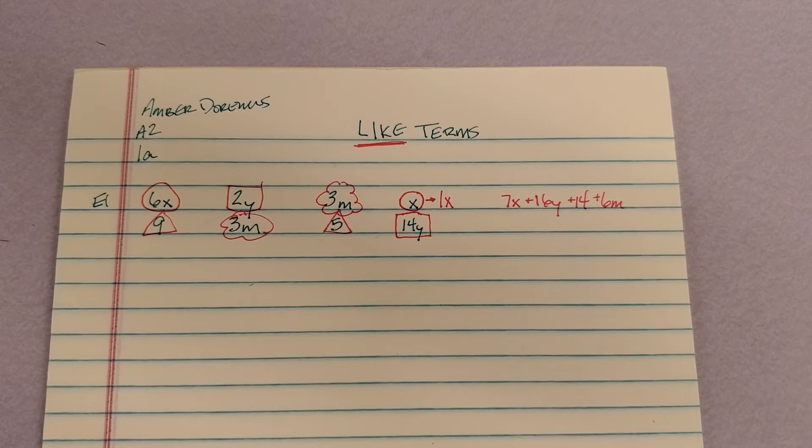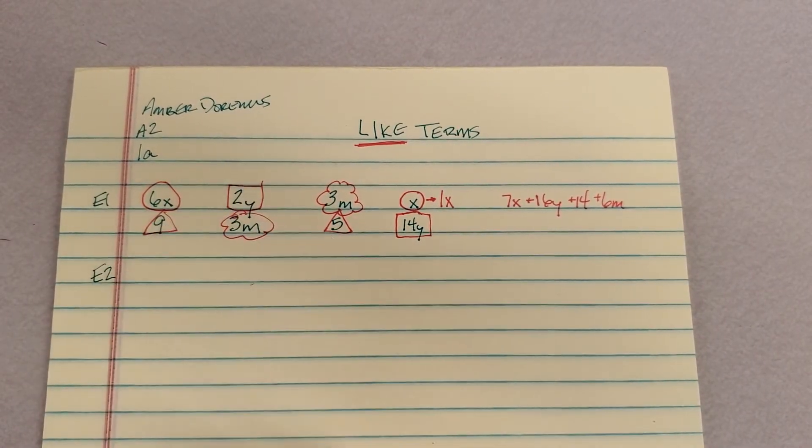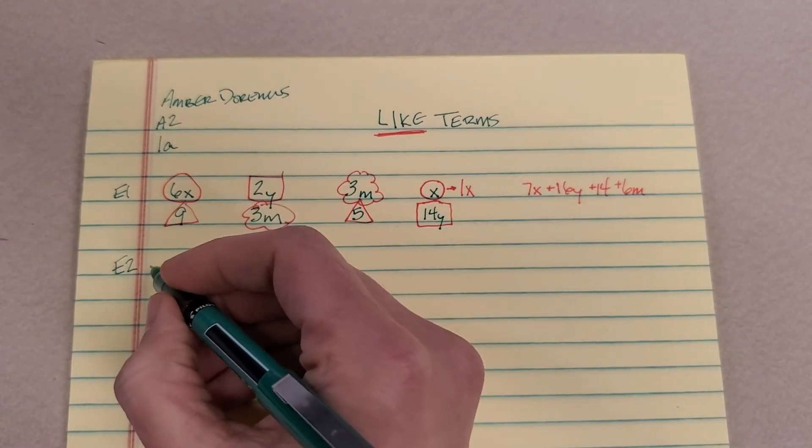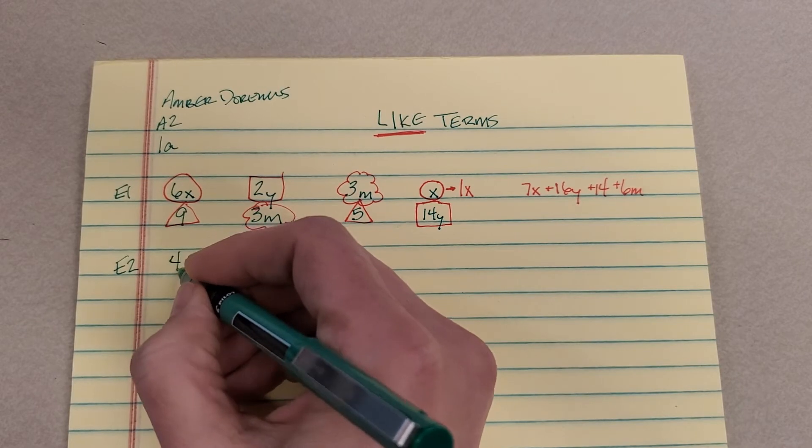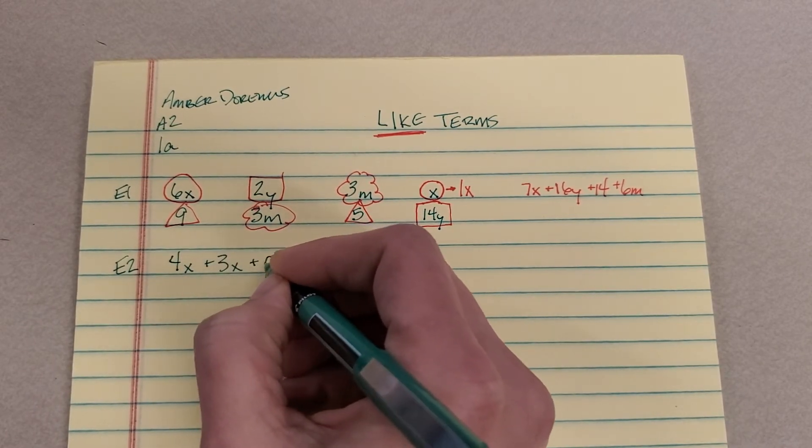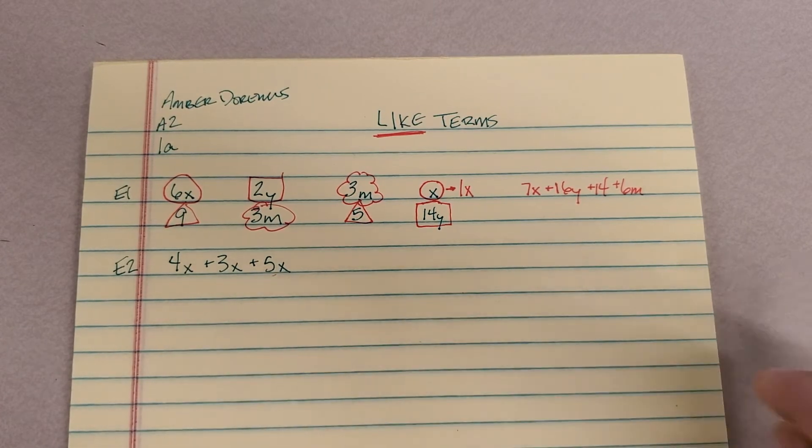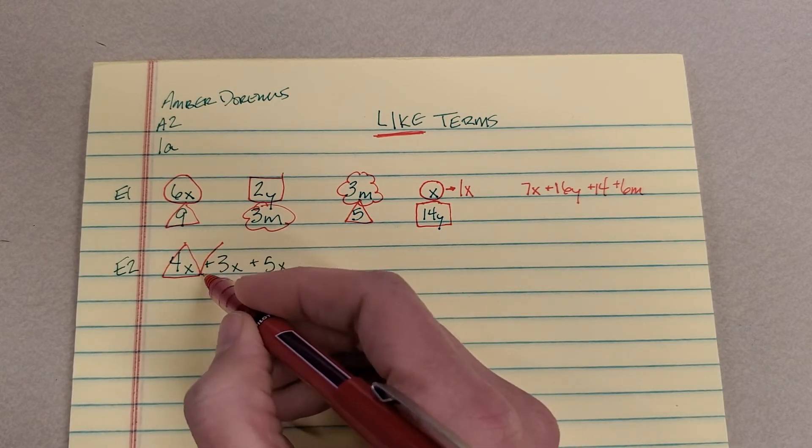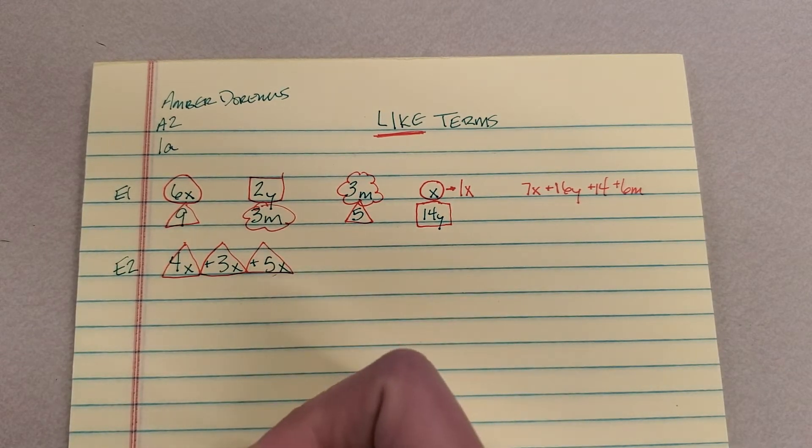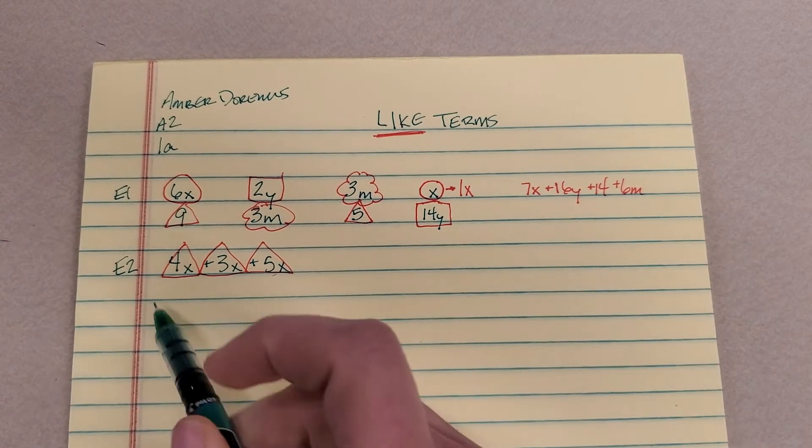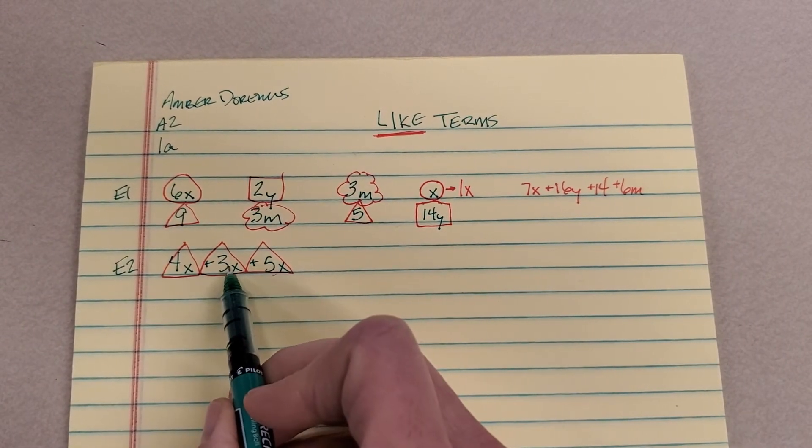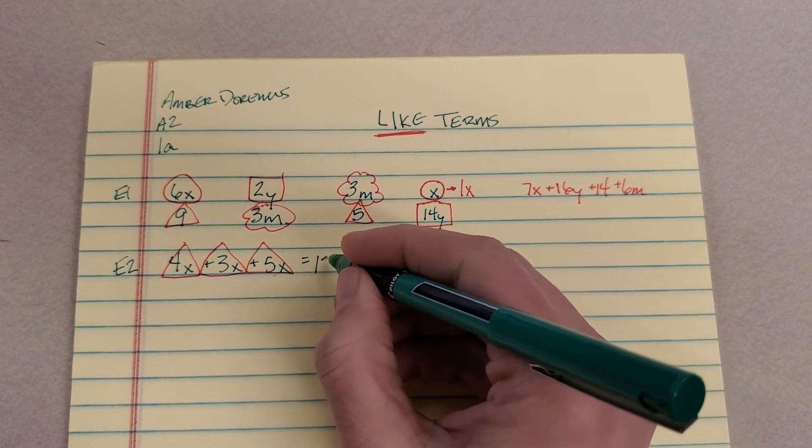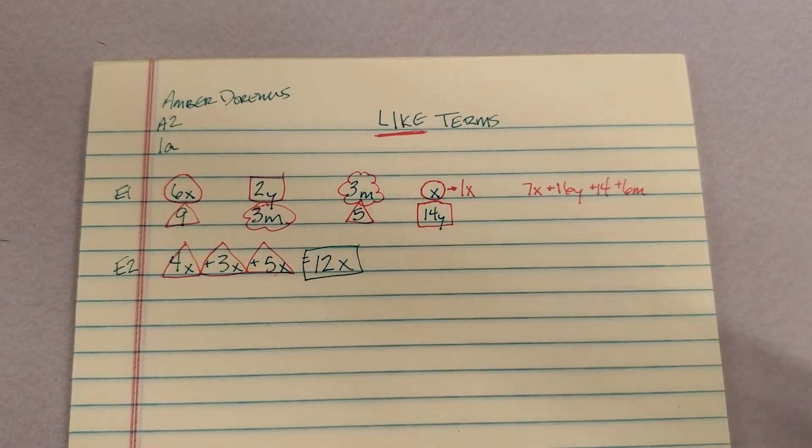So what will happen is you'll be given an expression with a bunch of terms, and your job is to combine them. So if we had like 4X plus 3X plus 5X, we need to combine like terms. So what's alike? Oh, here's some X's. I like to just put them in a shape. Here's a positive 3X, a positive 5X. Nothing else. 4X's and 3X's is 7X's plus 5X's, that's 12X's.